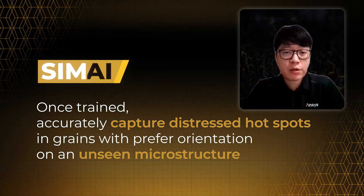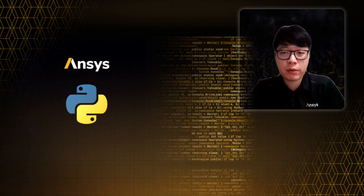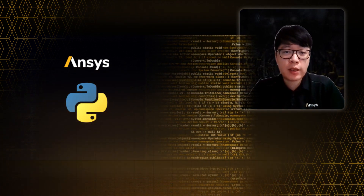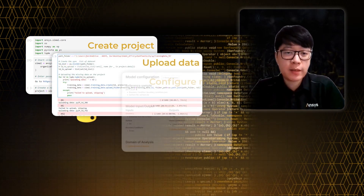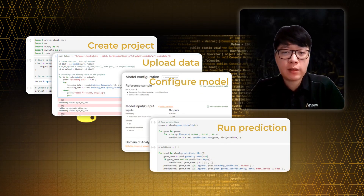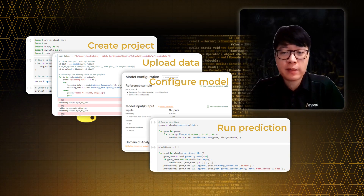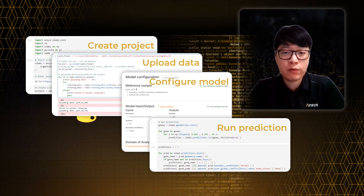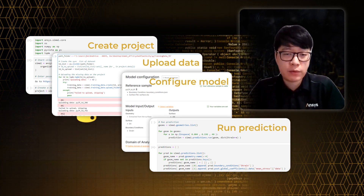This entire project can be automated with PySimAI, which is a Python library to interact with the SimAI platform on the cloud. It helps with automating the training data upload, partitioning the training and testing dataset, and can help with automating the submission of many predictions. The latter is especially useful in our case, since generating a stress-strain curve typically requires generating the stress field prediction at multiple different strain levels.